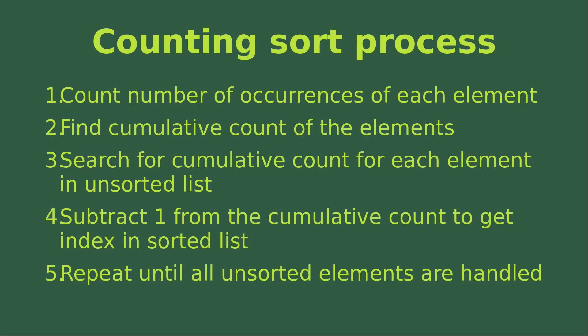The counting sort process involves these five steps. First, we need to count the number of occurrences of each element. Then we find the cumulative count of the elements. Then we search for the cumulative count for each element in the unsorted list. Then we subtract 1 from the cumulative count to get the index of the sorted list. And then we repeat the first four processes until all the unsorted elements are handled.